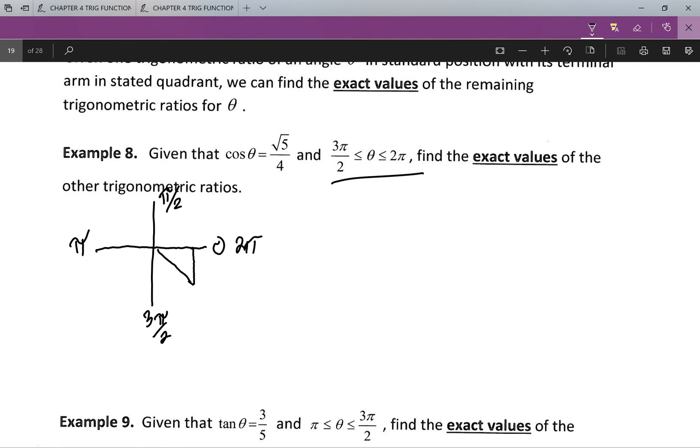Now we have cos theta equals root five over four. So cos theta is adjacent over the hypotenuse. So here I get my root five and there I get my four. So far so good, we haven't really changed too much in this question.